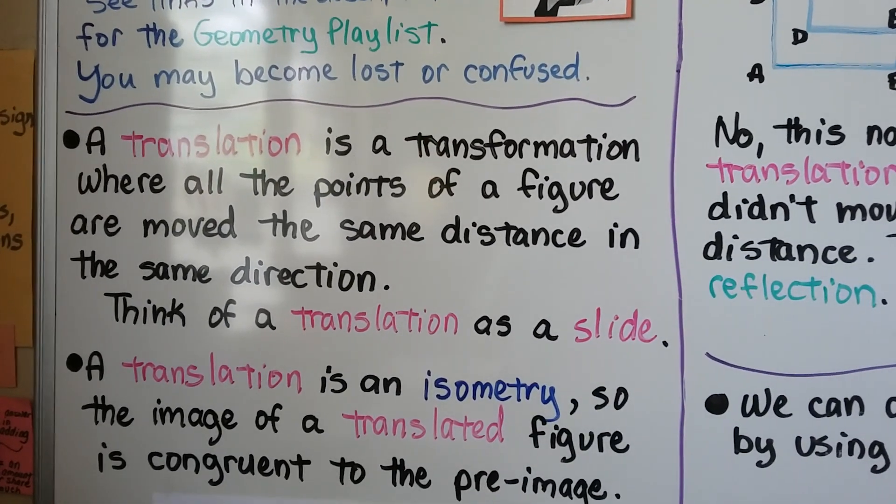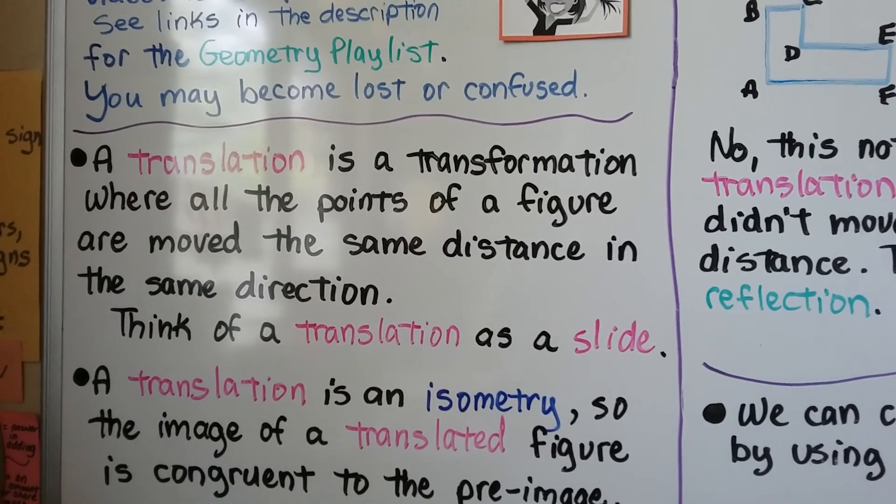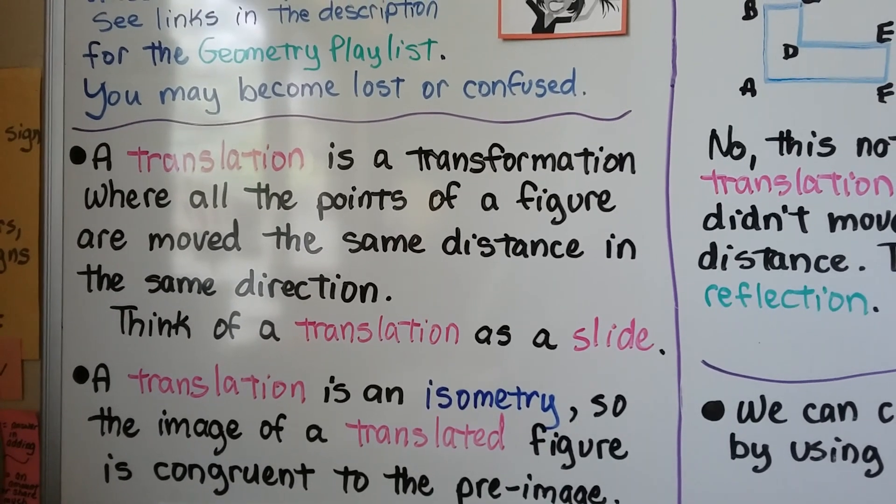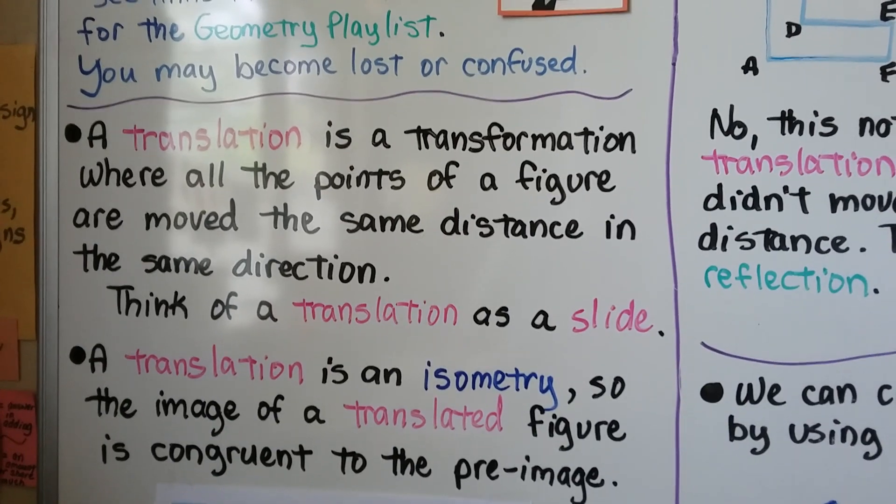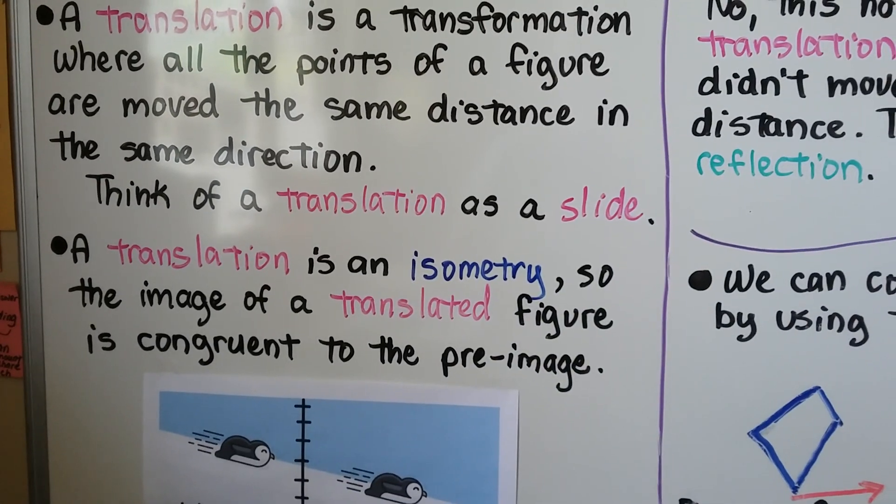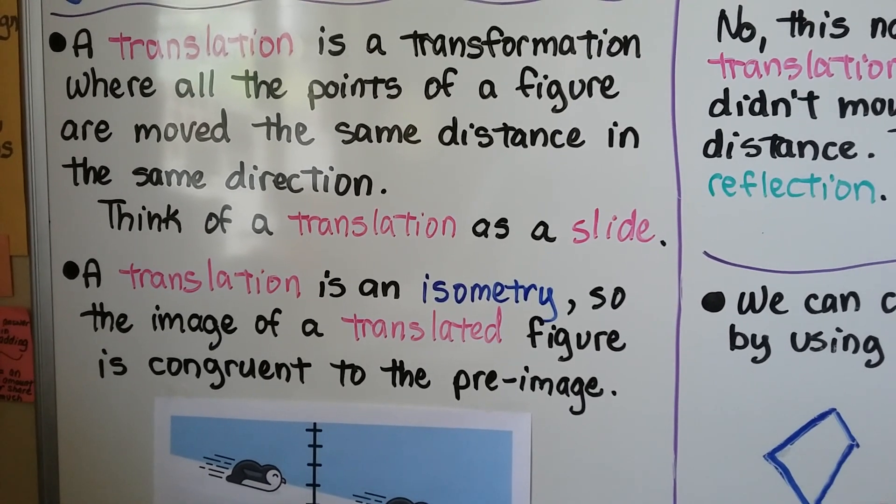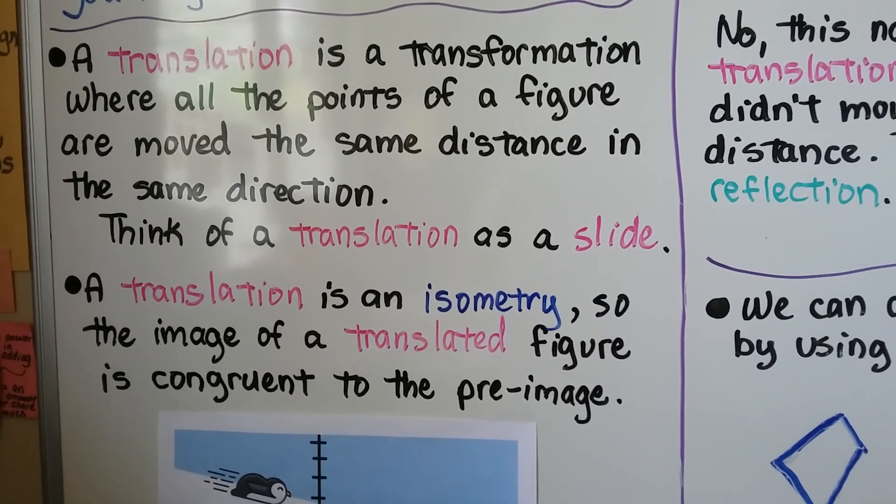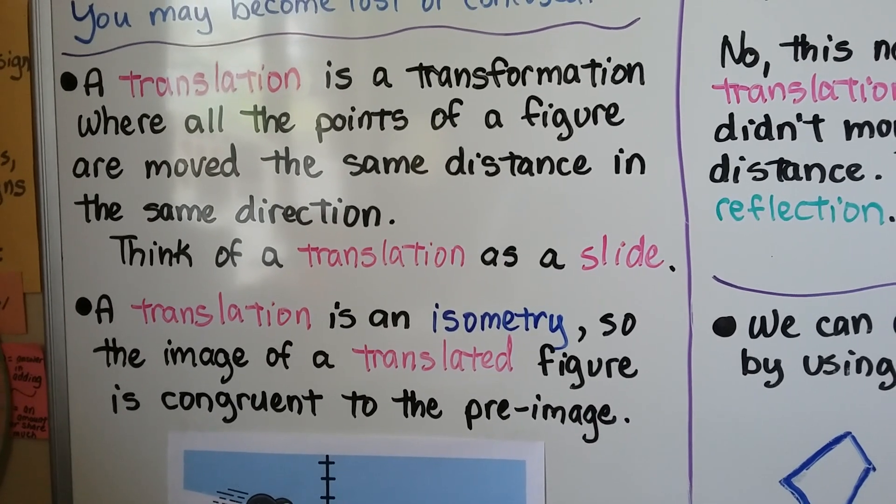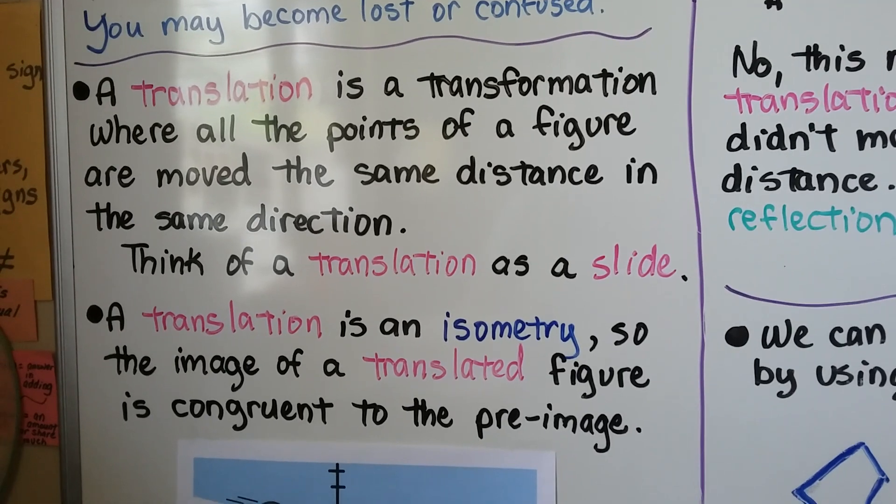A translation is a transformation where all the points of a figure are moved the same distance in the same direction. Think of a translation as a slide. A translation is an isometry, so the image of a translated figure is congruent to the preimage. We discussed isometry in the previous videos. It's a transformation that doesn't change the shape or size of a figure.